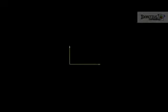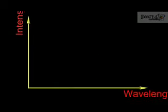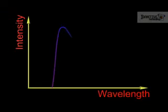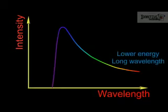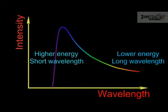Bremsstrahlung radiation has a continuous spectrum corresponding to electrons losing different fractions of their initial kinetic energy. When the electron loses a small amount of energy, a long wavelength X-ray is produced. When it loses a larger amount of energy, shorter wavelength X-rays are produced.